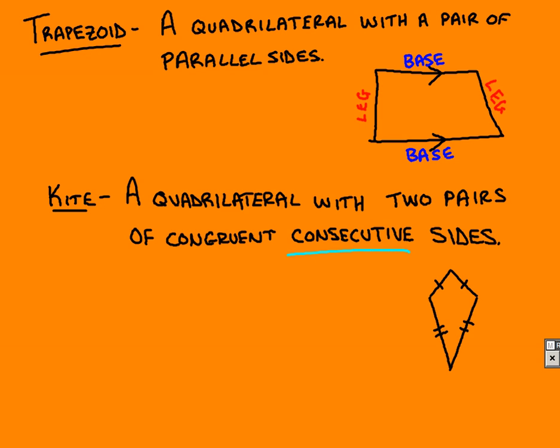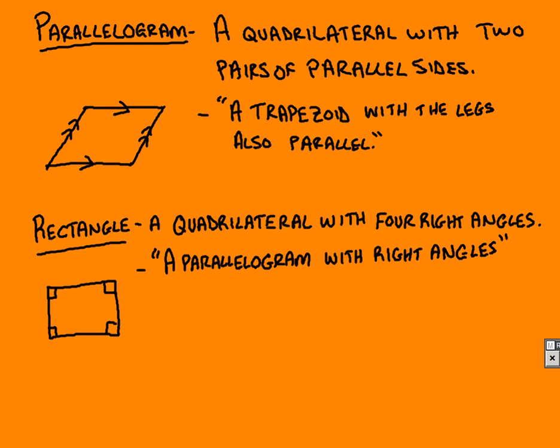Now, beyond that, we have kind of a hierarchy that's going on here, and we can move forward from them. Remember, a trapezoid had one pair of parallel sides. If the other sides, the legs, if they happen to be parallel as well, we have what's called a parallelogram. So, two pairs now of parallel sides, and that's why we call it a special trapezoid where the legs are also parallel.